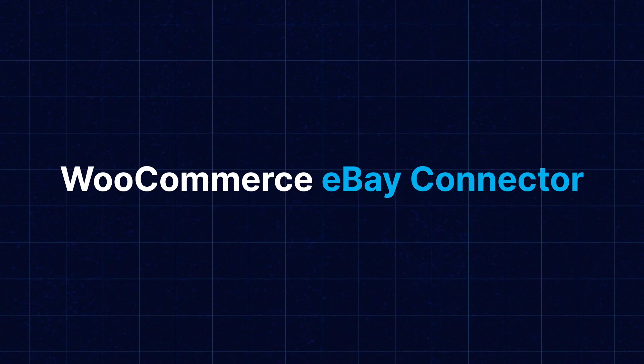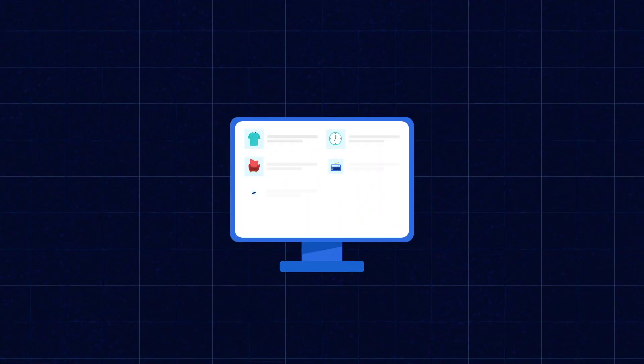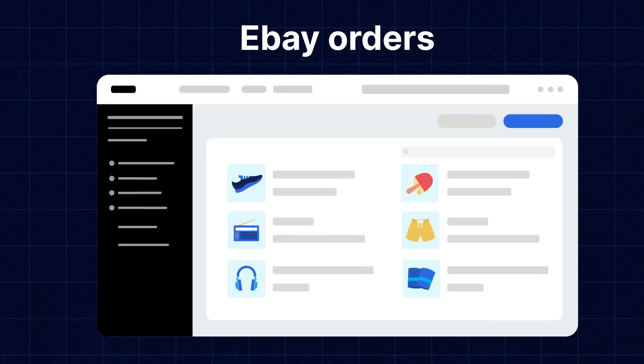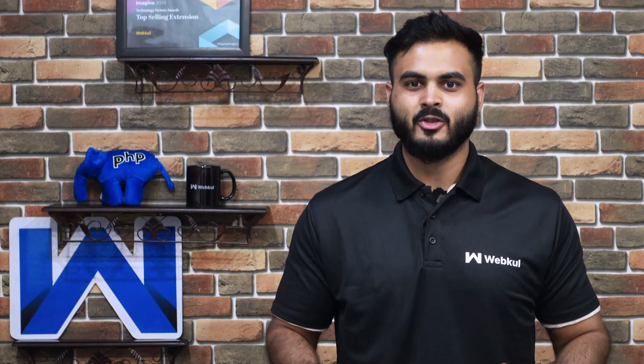I'm Satyam Deshaid and today we'll be going through the WooCommerce eBay connector. The WooCommerce eBay connector is a plugin that will integrate your WooCommerce store with the eBay store. It supports two-way syncing, meaning product syncing can be done from WooCommerce to eBay and vice versa. You can map the eBay and WooCommerce categories and also import eBay orders into the WooCommerce store. In today's video, we'll demonstrate the import and export process and also check the configurations available in the connector.